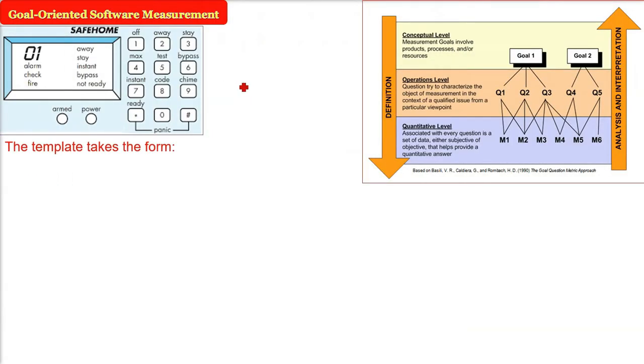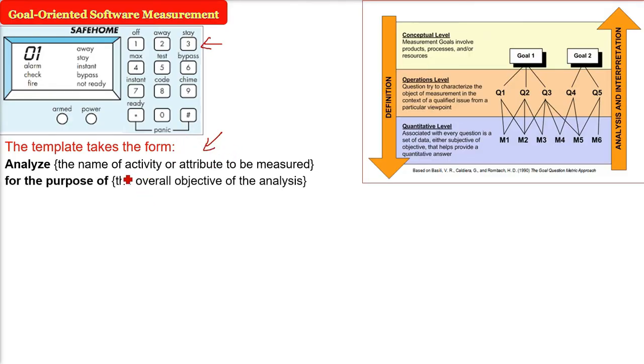I told you that we will make a template. That template will give you the actual scenario. If you remember, this is a SafeHome product which is employing software. Now when we apply GQM here, the template will answer like this. Let me tell you the template first. Analyze, inside which we are going to give the name of the activity or the attribute to be measured.